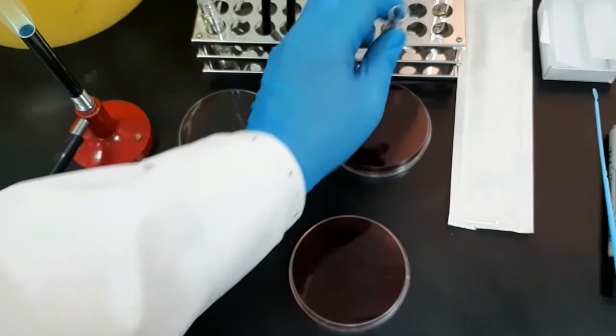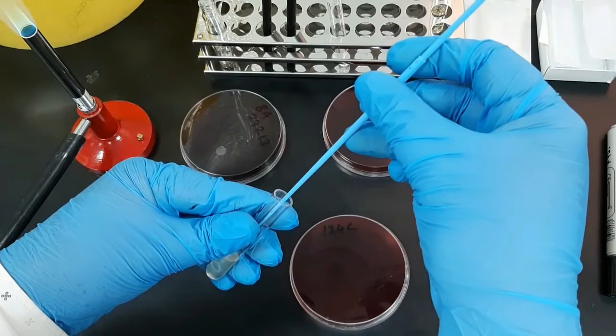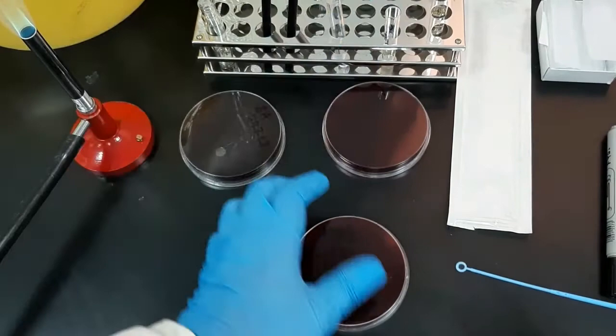Then dip the loop into the liquid bacterial suspension and transfer it into the fresh labeled plate by spreading over the first quadrant area using close parallel streaks in a zigzag motion.